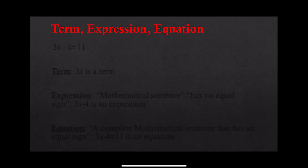Now we will see what we mean by terms, expressions, and equations. Suppose we have the example: 3x minus 4 equals 11. Here, 3x is considered to be a term, and 4 is also considered to be a term. Anything without a plus or minus sign separating it is considered to be a term.